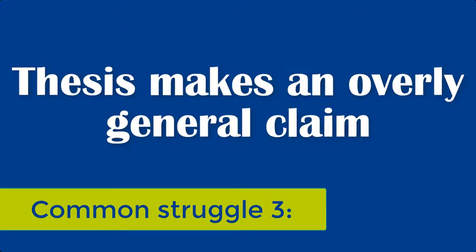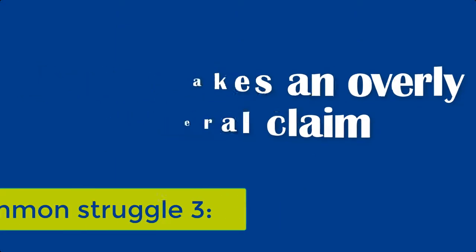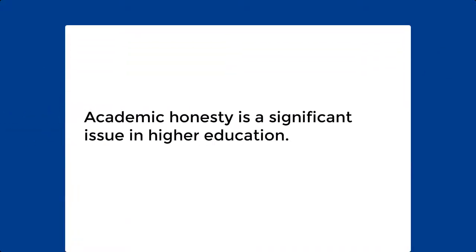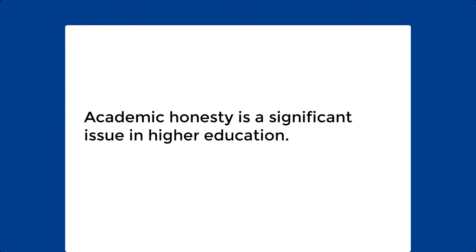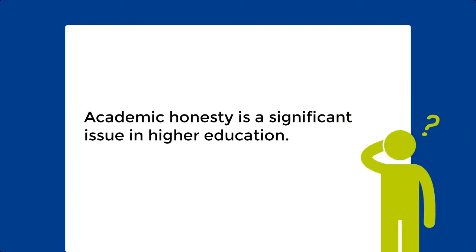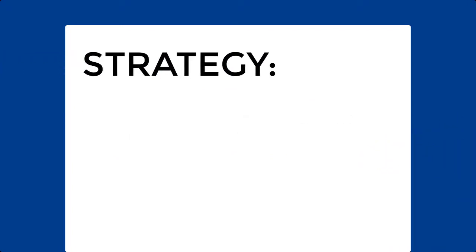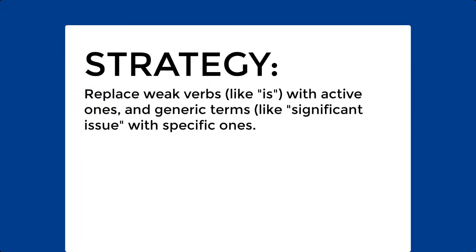Common Struggle 3: Thesis makes an overly general claim. For instance, 'Academic honesty is a significant issue in higher education.' Again, duh! If the paper is really going to address academic honesty as a whole, it'd have to be a thousand pages — so that's just not going to happen. The strategy? Replace weak verbs like 'is' with active ones, and generic terms like 'significant' with specific ones. Your sentence could look like this.